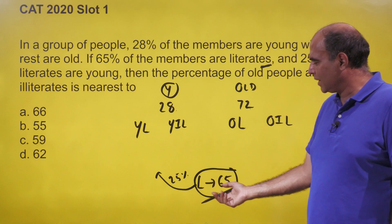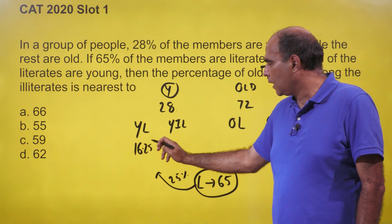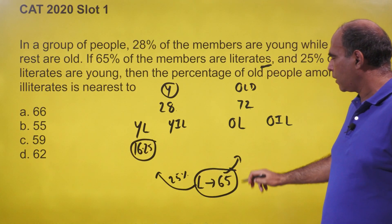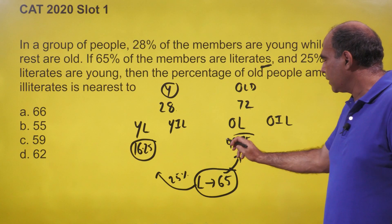So 16.25 are young literates. And if this is 16.25, the remaining literates will go here, which will be 48.75. And once I get these two numbers, I know this sum is 28.